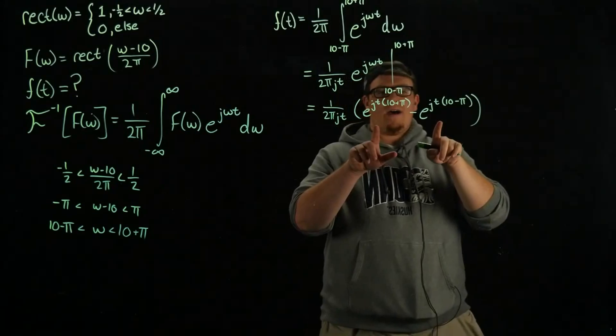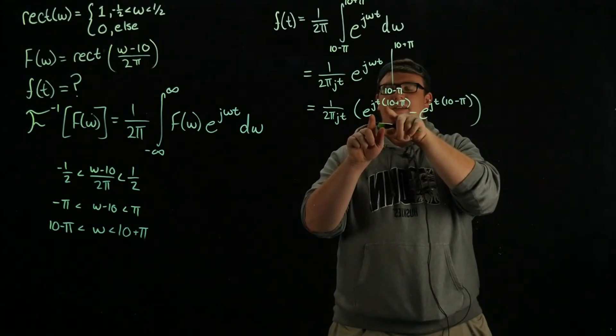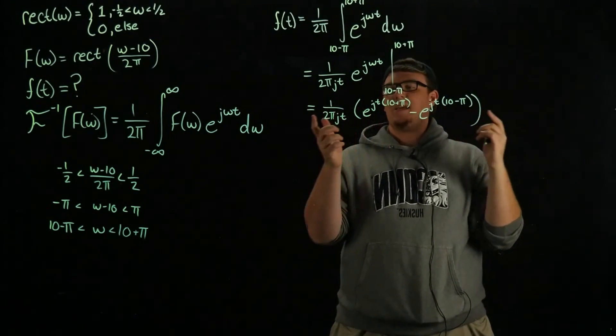Very quickly we have a term here that can be factored out. Both of these things have e to the j 10 t which can be pulled out.